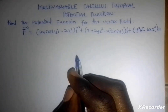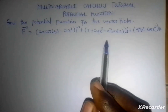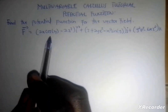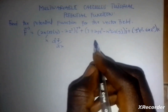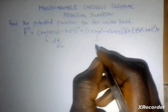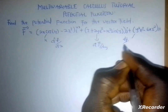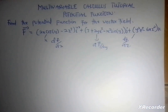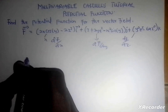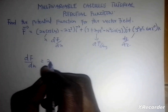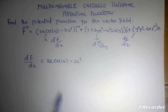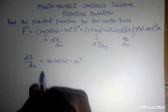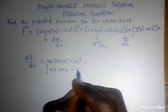First of all, what you're going to do is take one part of this gradient field. This part is the f sub x. Likewise, this part is the f sub y, and the other part is the f sub z. You're going to take any of them, but normally you'd take the one which is easier to integrate first. So if I have df/dx equal to 2x cos(y) minus 2z cubed, then if I integrate this back again, I should get my potential function. So: integral of (2x cos(y) minus 2z cubed) dx.